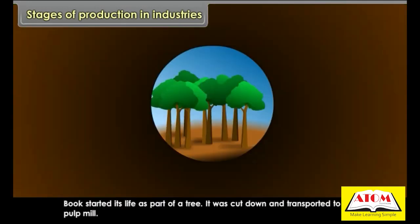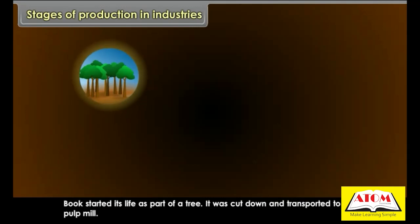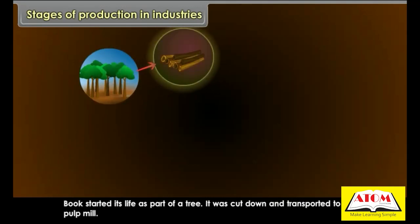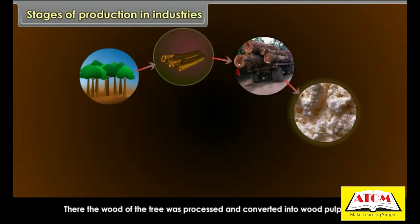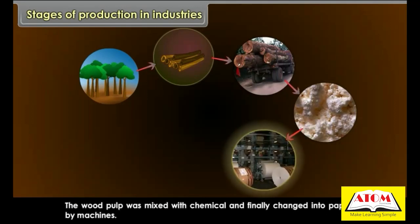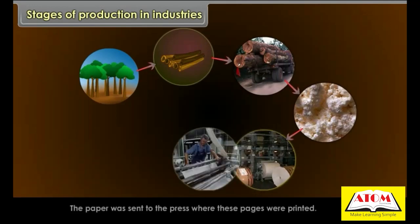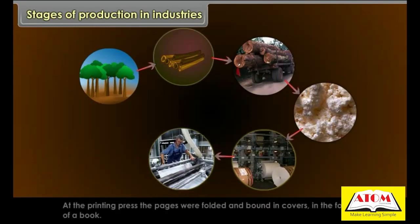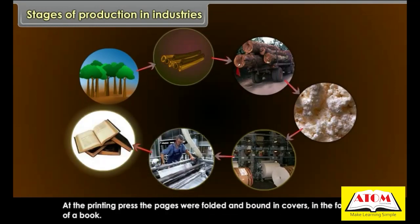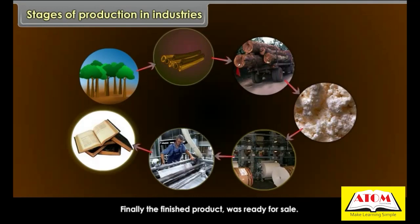A book started its life as a part of a tree. It was cut down and transported to the pulp mill, where the wood was processed and converted into wood pulp. The wood pulp was mixed with chemicals and changed into paper by machines. The paper was sent to the press where pages were printed, folded and bound in covers in the form of a book. Finally, the finished product was ready for sale.